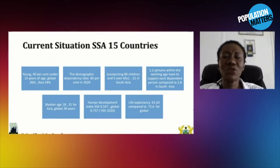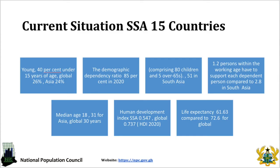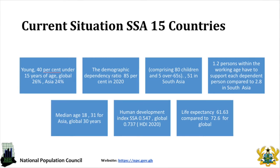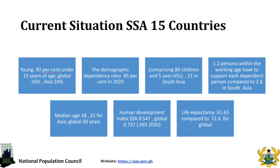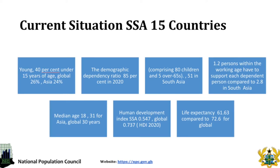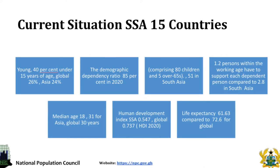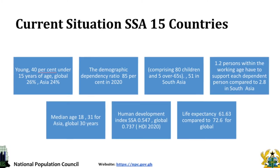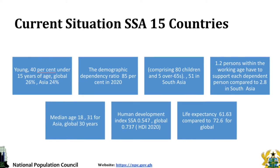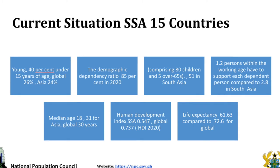Now we come to where I sit — the current situation in sub-Saharan Africa and the indicators that are making it difficult for us to develop. The young age: 40% under 15 years; the global figure is 26%, Asia 24%. The dependency ratio is 85%, which means that there are so few people taking care of so many children, and children are absolute consumers — that is a challenge. We have 80% dependency ratio in children and just 5% above 65 years, compared to Asia. In the developed world, 1.2 people are supporting per dependent, versus about 2.8 elsewhere — meaning even with the same GDP per capita, some are going to be better off than others.